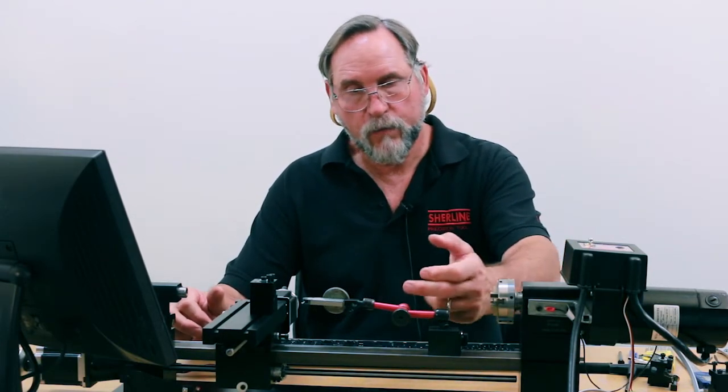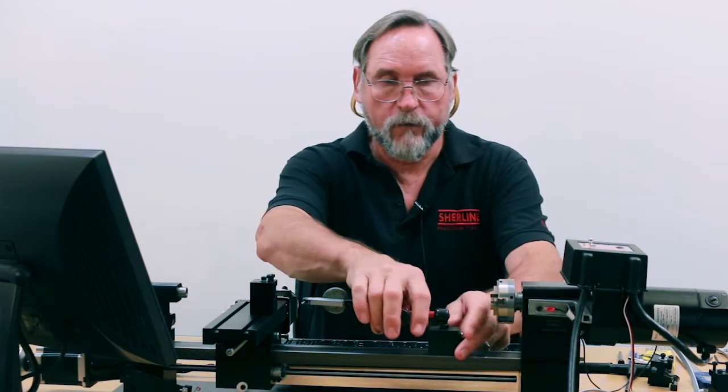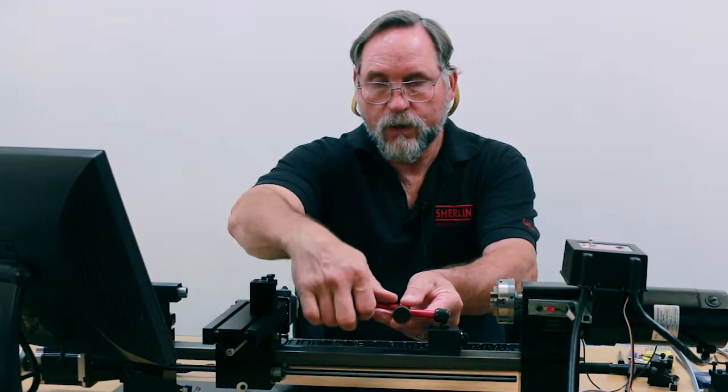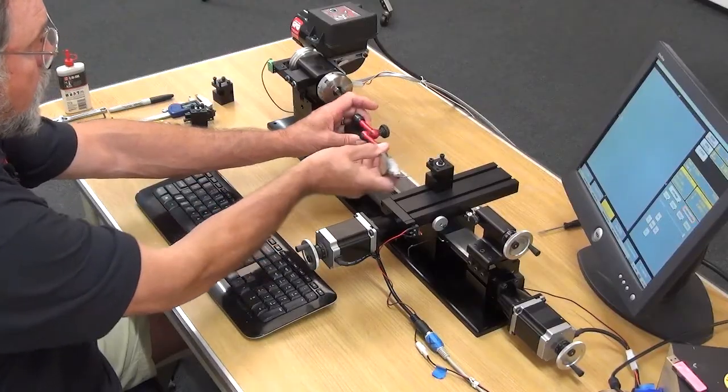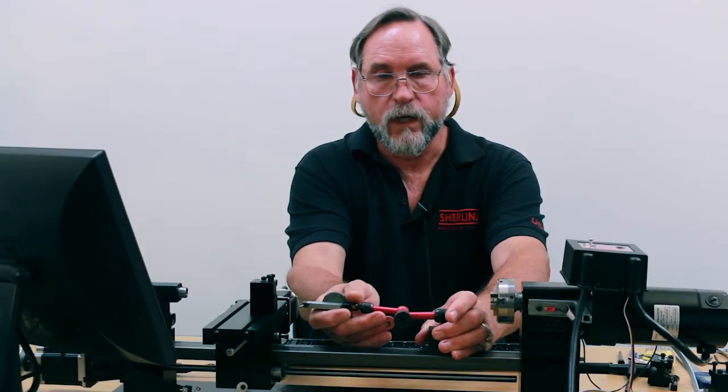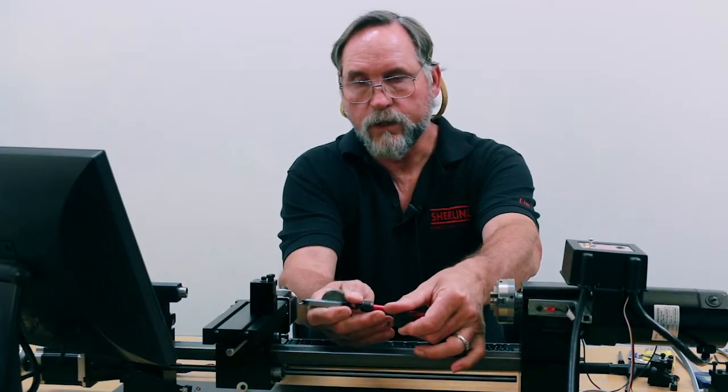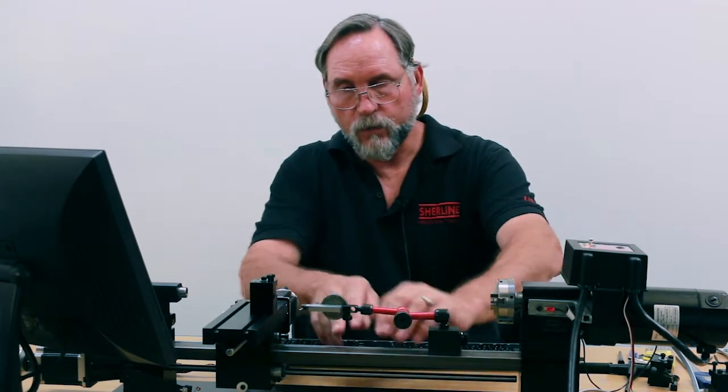You want to have your indicator parallel with the axis that it's mounted to. You don't want it off at an angle one way or the other. Any angle other than parallel with the surface is going to give you a false reading or inaccurate reading as far as how much backlash you have. So this is now parallel with the z-axis.